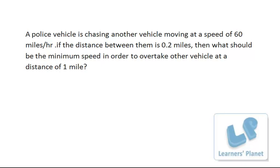Hello friends, in this session I'm solving a query sent by a student. The problem is based on time, speed, and distance—a simple problem. A police vehicle is chasing another vehicle moving at a speed of 60 miles per hour. If the distance between them is 0.2 miles, then what should be the minimum speed in order to overtake the other vehicle at a distance of one mile?